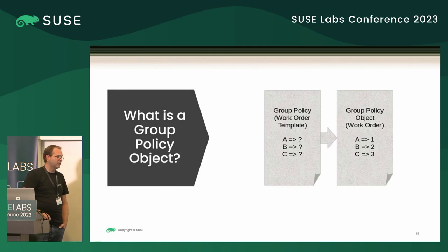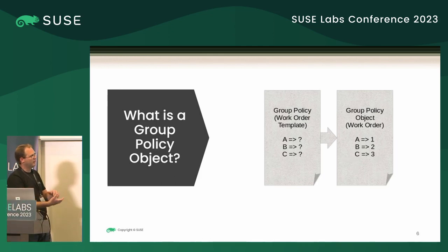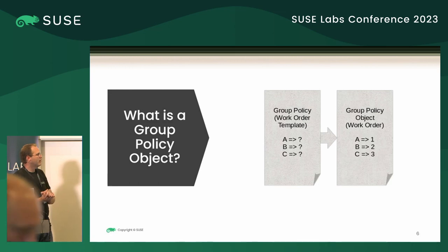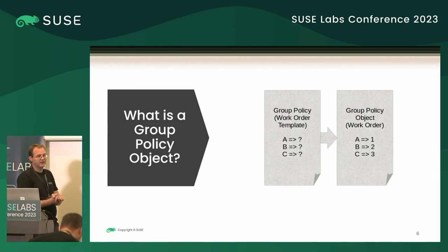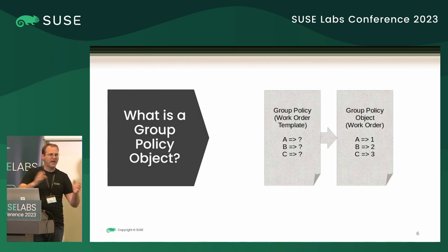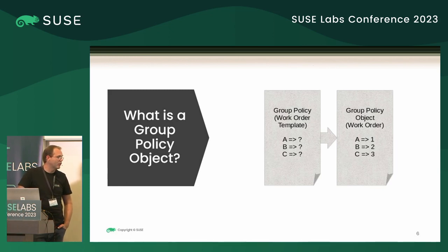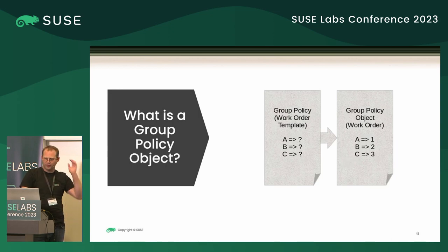The difference between group policy and a group policy object: group policy is like a template for a work order, and a group policy object is like a filled-out copy of that work order. Group policy is a framework for managing everything, and a group policy object will apply to specific hosts and specific users. Group policy includes a bunch of tools for managing and the infrastructure for distributing policies.